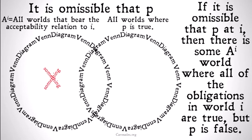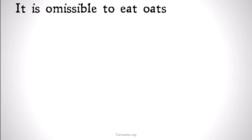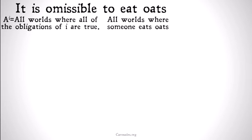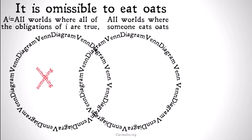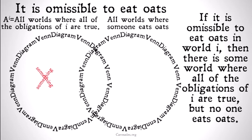Hopefully you're seeing an isomorphic relationship between these comparisons and our categorical logic. Let's give an example: it is omissible to eat oats — you don't have to eat oats. We have all worlds where all obligations of I are true and all worlds where someone eats oats. There is at least one world where all obligations of I are true and no one eats oats, because if eating oats were an obligation of I, we couldn't say it's omissible. If it's omissible to eat oats in world I, there is some world where all obligations of I are true but no one eats oats.